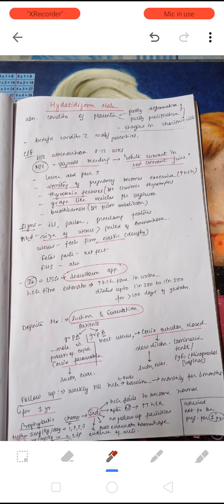It's a benign condition with malignant potential. Clinical features that are seen is history of short period of amenorrhea. The most common presentation is vaginal bleeding that is also referred to as white currant in the red currant juice.